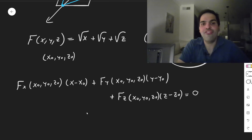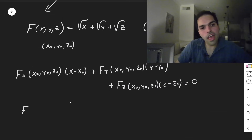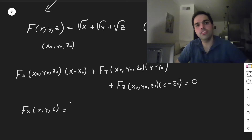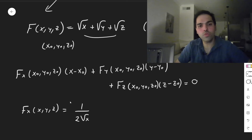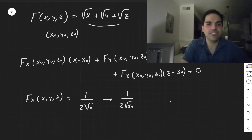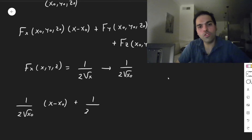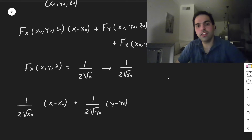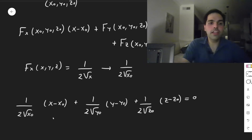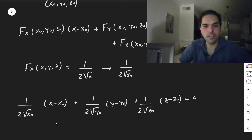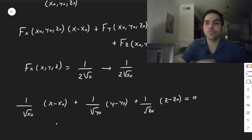Now let's calculate fₓ, f_y, f_z. So fₓ at the point (x, y, z): differentiating with respect to x gives 1/(2√x), so at the point (x₀, y₀, z₀) we get 1/(2√x₀), and similarly for f_y and f_z. So what we get is: (1/(2√x₀))·(x − x₀) + (1/(2√y₀))·(y − y₀) + (1/(2√z₀))·(z − z₀) = 0. We can multiply all sides by 2, giving coefficients 1/√x₀, 1/√y₀, and 1/√z₀.